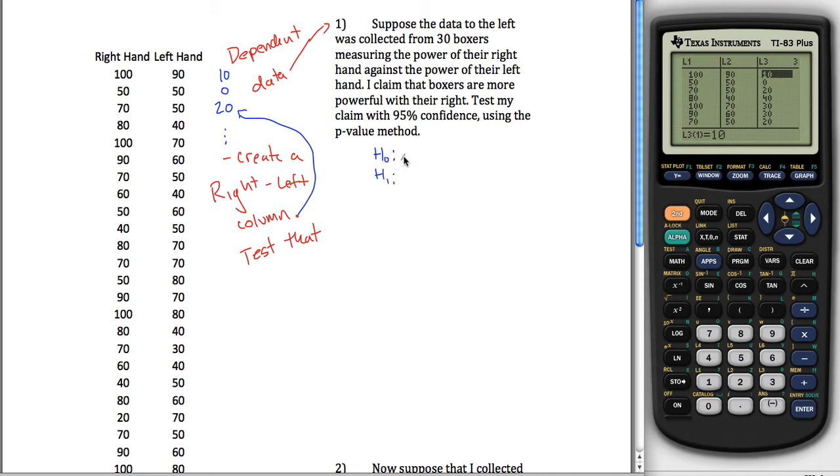My null hypothesis is always, it used to be mu equals mu naught. Now it's going to be mu with a little d next to it for mu of the difference, because this is kind of my difference column. And I want that to equal mu naught, but mu naught in this case in all of these problems in our class will be equal to 0, because my null hypothesis is that the two hands are the same. And if they're the same, when you do one minus the other, you're left with 0.